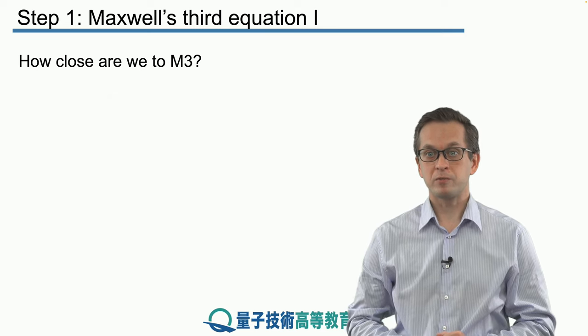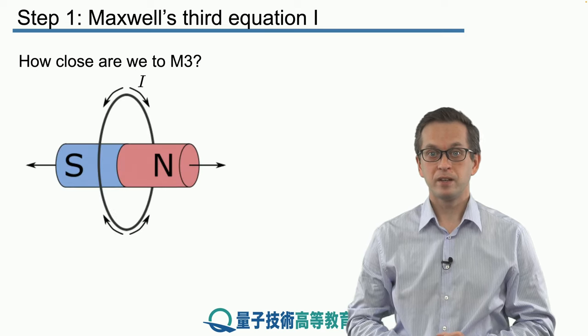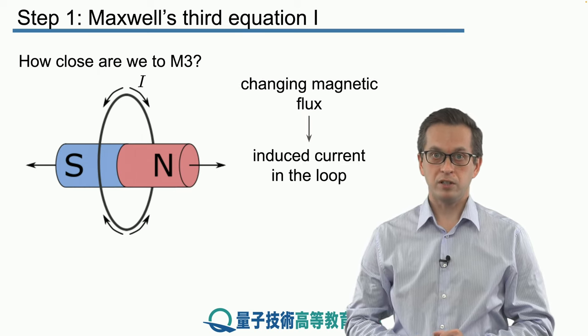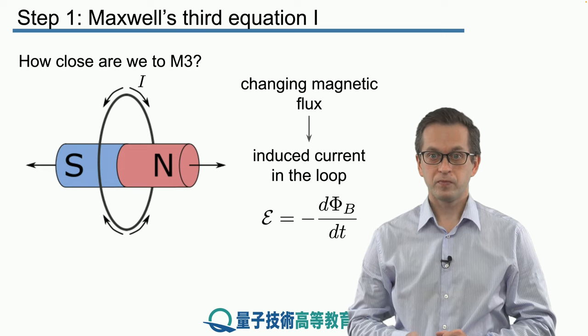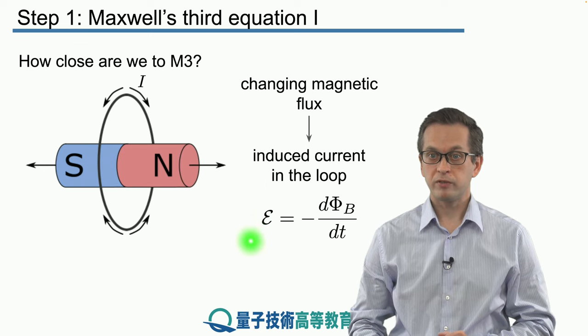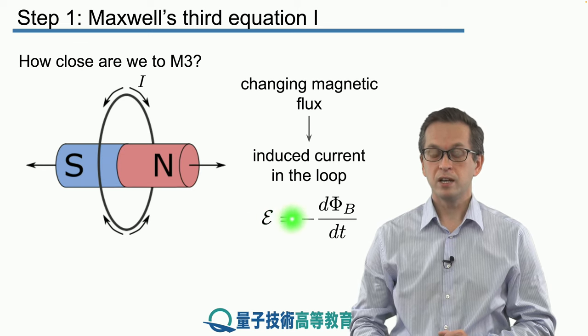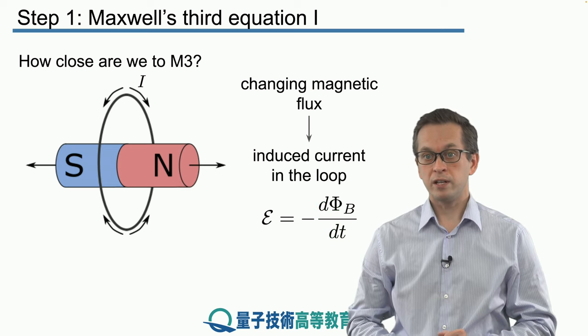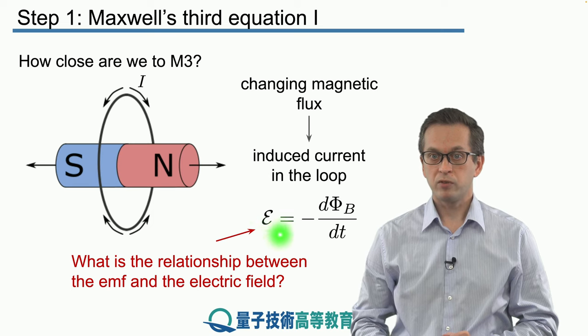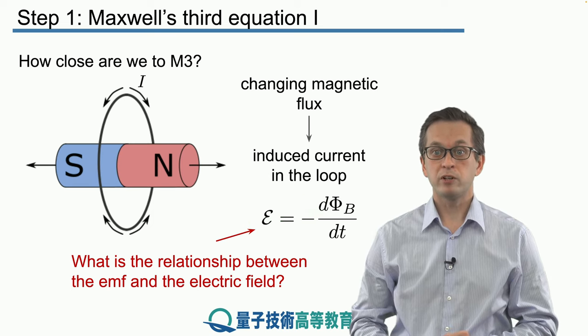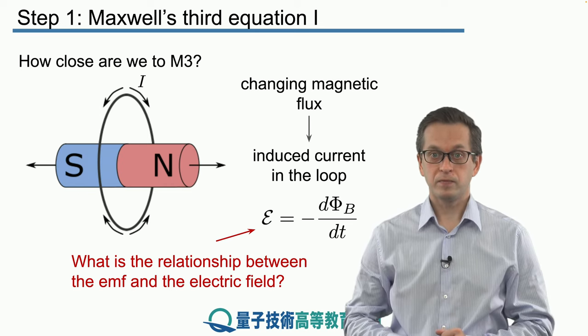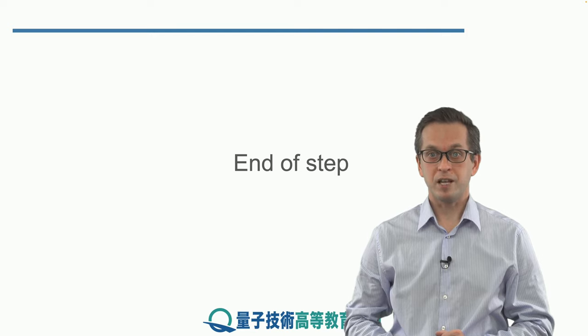So how close are we to Maxwell's equation number three? So far, we have a changing magnetic flux inducing a current in the loop. We've got this formal relationship between the electromotive force and the negative rate of change of the magnetic flux. We would like to express this electromotive force in terms of the electric field - finding a relationship between the magnetic field and the electric field. That's what we are going to do in the next step.